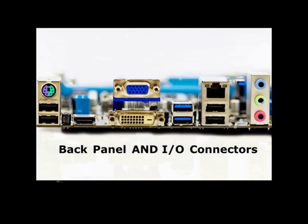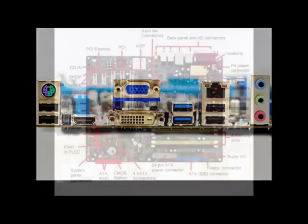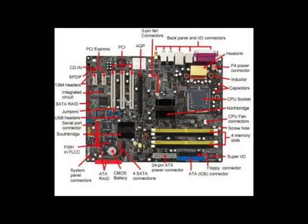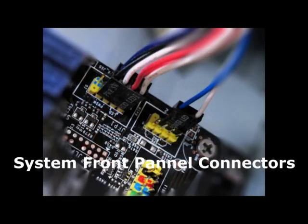The I/O ports and connectors on the back panel of the system are the gateways through which the system communicates with external devices such as a keyboard, mouse, printer, and monitor. The front panel connectors, also known as the front panel header or F-panel, is a block of connectors on a motherboard that controls the power on, power reset, beep codes, speaker, and LED light indicators on your PC case chassis.